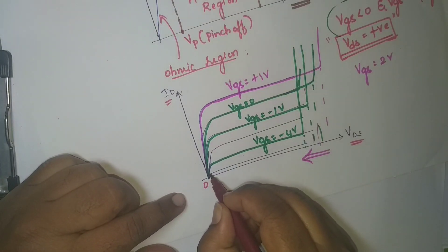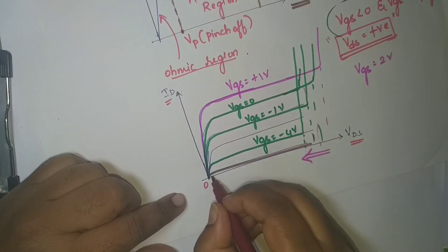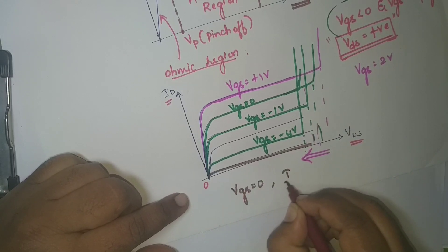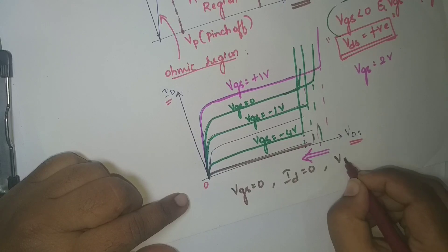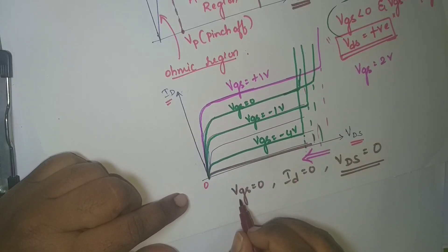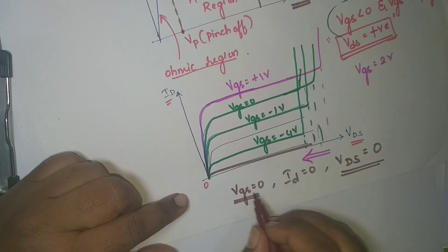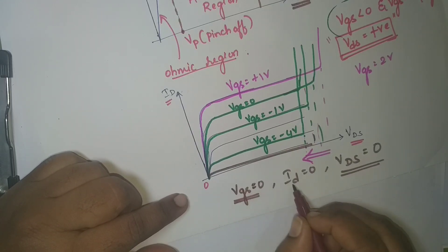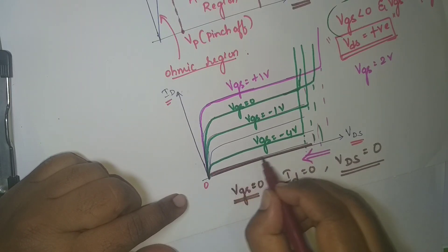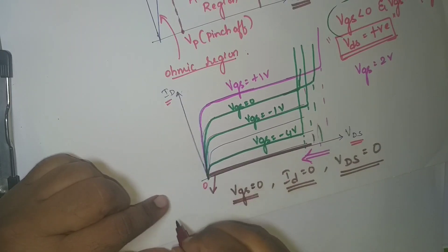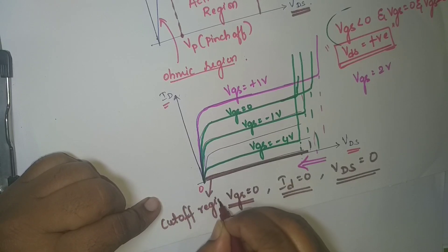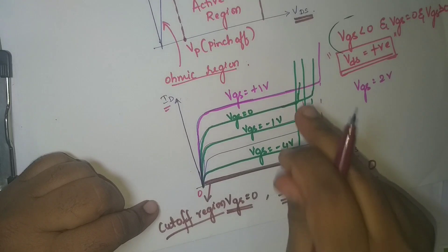The last region is the cutoff region. This is the region where VGS is equal to 0 and ID is also equal to 0. That is, when I do not apply any VDS — when VDS is equal to 0 — and VGS is also 0, the current will be 0. This region is called the cutoff region, and it is an important region for JFET.